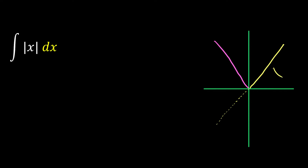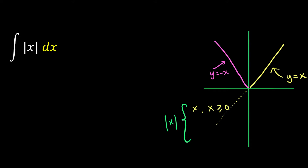So whatever is positive is essentially just a normal function where y equals x. Meanwhile, the reflected portion we say is negative x. This is why modulus x is a piecewise function that can be broken down to two parts: when x is bigger than 0, it's just x; and when x is smaller than 0, the graph becomes negative x.